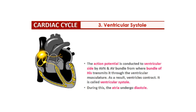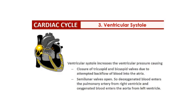Then we have ventricular systole. The action potential is conducted to the ventricle side by the AV node and the AV bundle, from where the bundle of His transmits it to the ventricular musculature. Because of this, the ventricles contract — this is called ventricular systole. During this time the atria are relaxed, so they undergo diastole.